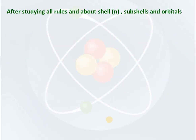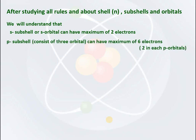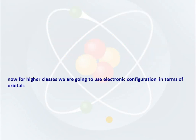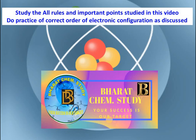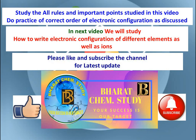After studying all the rules about shells, subshells and orbitals: the s subshell or s orbital can have a maximum of 2 electrons. The p subshell consists of 3 orbitals and can have a maximum of 6 electrons (2 in each orbital). The d subshell consists of 5 orbitals and can have a maximum of 10 electrons (2 in each orbital). In the next video we will study how to write electronic configurations of different elements. Please like and subscribe the channel for the latest updates.